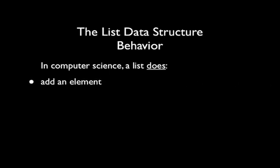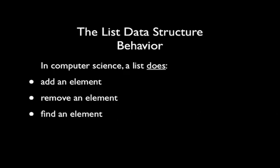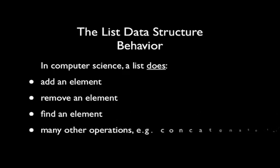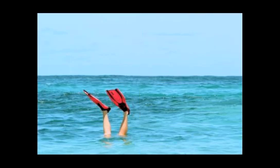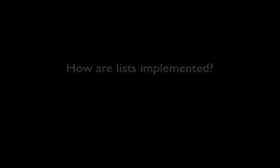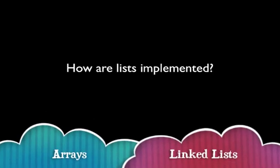Now that we know the properties of a list, let's move on to the behavior. At a minimum, a list must be able to add an element, remove an element, and find an element. In addition, you can concatenate two lists, add a bunch of items at once, and so on. Alright, we're done with definitions — let's jump into linked lists.